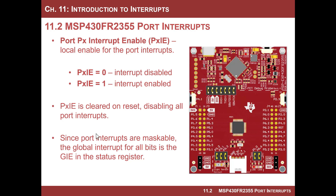These are all maskable, meaning that even though you enable the local interrupt, you also have to set the GIE bit in the status register — that's where you use the instruction EINT. That allows maskable interrupts globally, and then the local enable tells the system that this specific peripheral's flag is now going to be potentially asserted when there's an event.